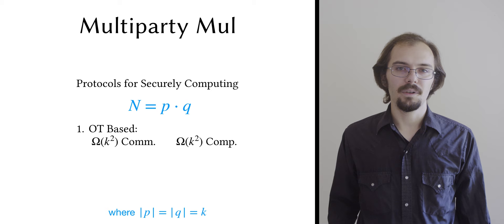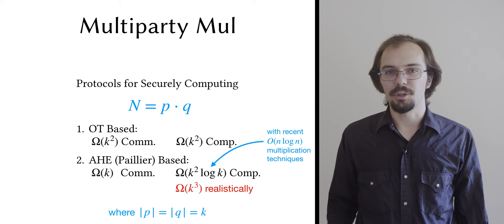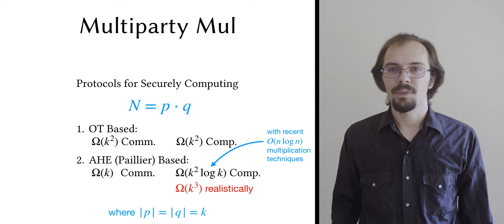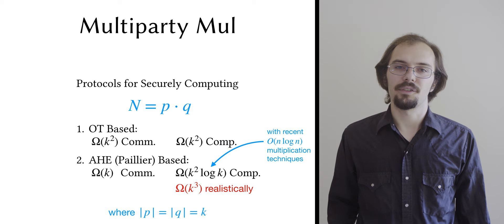Homomorphic encryption-based multiplication protocols like the ones used by HMRT have better communication complexity, but worse computation complexity. For example, HMRT use Paillier encryption, which requires modular exponentiation with a modulus of length proportionate to k. We take the OT-based approach, but we leverage the Chinese remainder theorem once again to improve our result relative to naive multiplication.